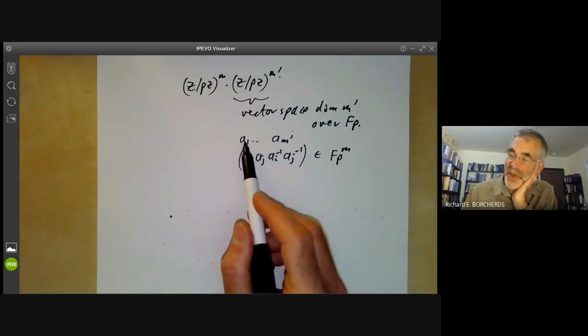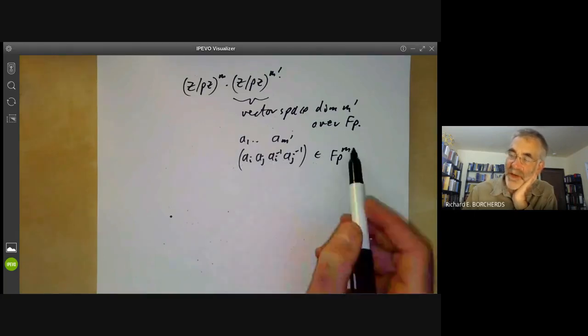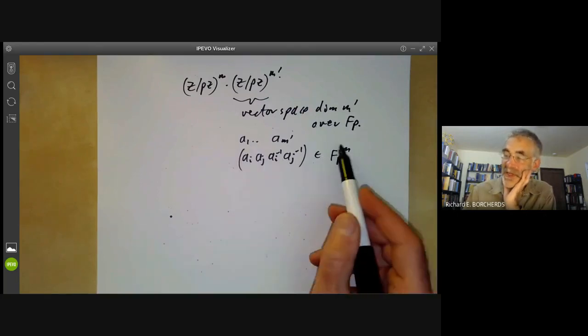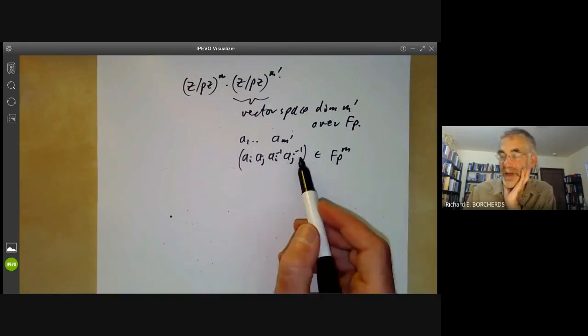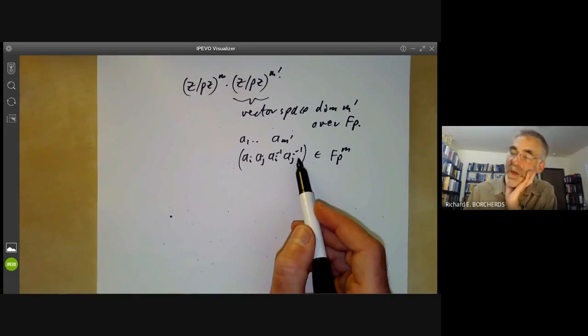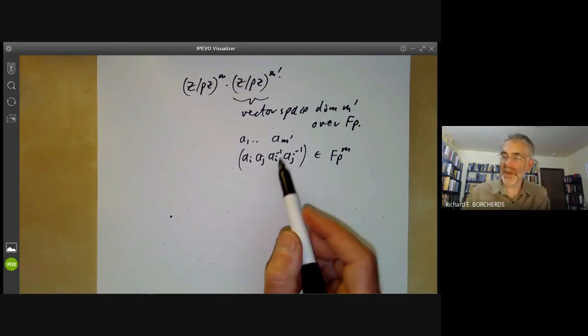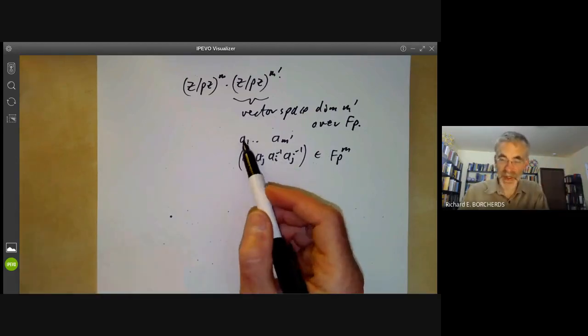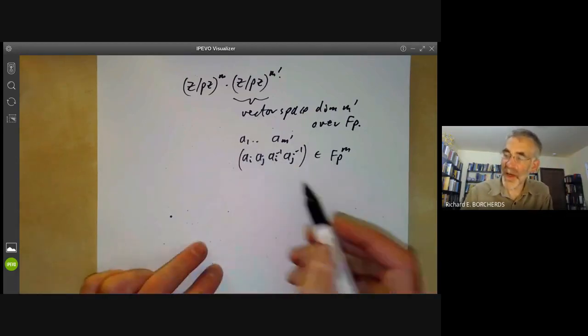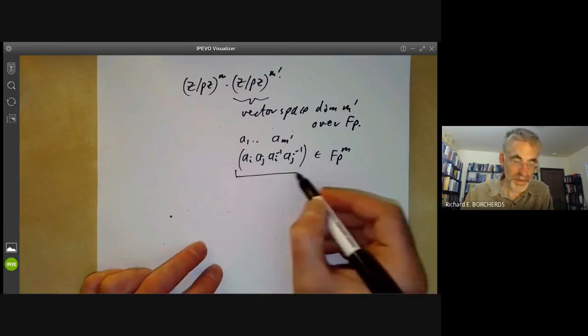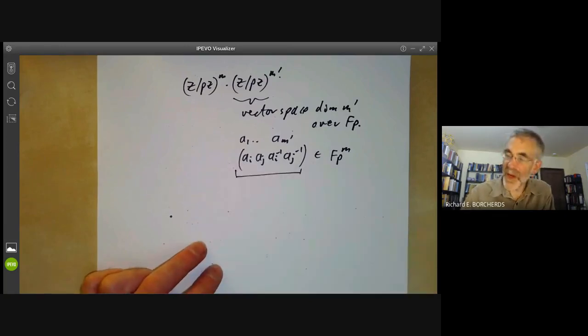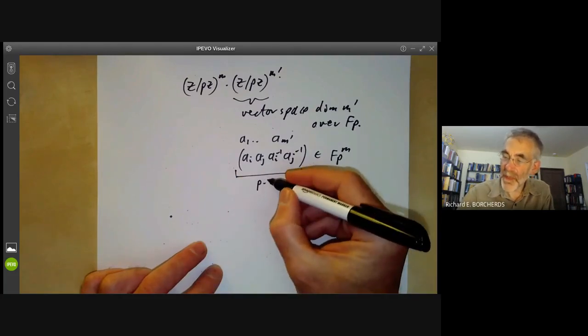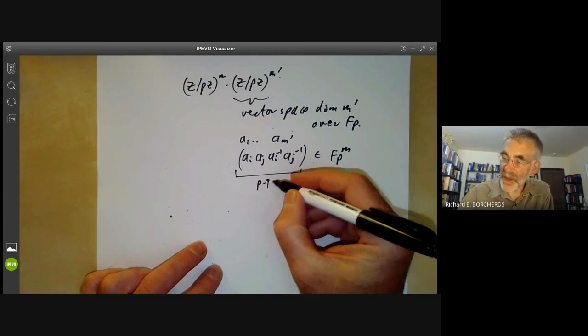It turns out that if you take a basis and choose all these commutators, it's not very difficult. You can get a group with, if you just choose an element here to be that commutator, you can define at least one group with these commutator relations. In fact, you can define others because we haven't actually specified what the pth powers of the ai's are, but we won't worry too much about that. So how many ways can we choose that? Well, there are about p times p minus one over two, sorry, m prime by m prime minus one over two ways of choosing pairs i, j.